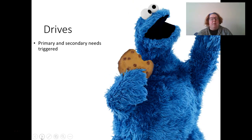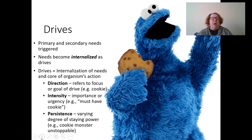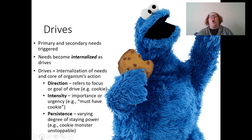Our drives can be both primary or secondary needs triggered. This need becomes internalized, and this internalization of the drive is what sets drive theorists apart from strict behaviorists — it's an internal process. The drives have three components: direction or focus (for Cookie Monster, the cookie is the goal), intensity or urgency (Cookie Monster has a strong urgency for cookies), and persistence — the varying staying power. Cookie Monster always wants cookies, but for most people, our drive ebbs and flows depending on our mood and what other competing drives we might have.